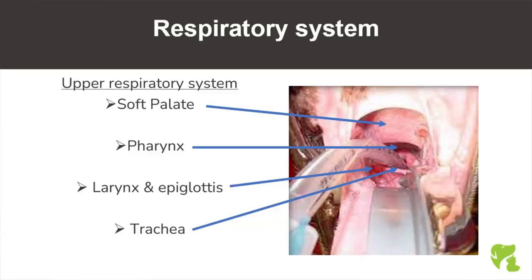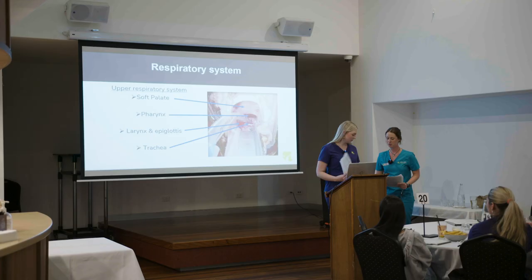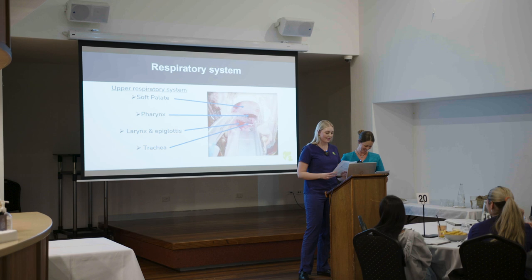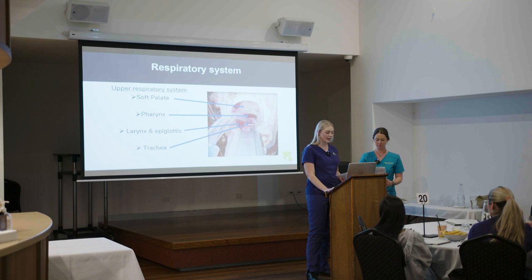Moving on to respiration, we'll briefly touch on the respiratory system and what it's made up of. The respiratory system comprises the nose, pharynx, larynx, trachea, bronchi, lungs, and diaphragm. The function of the respiratory system is to support the passage of oxygen into the body and carbon dioxide out of the body.